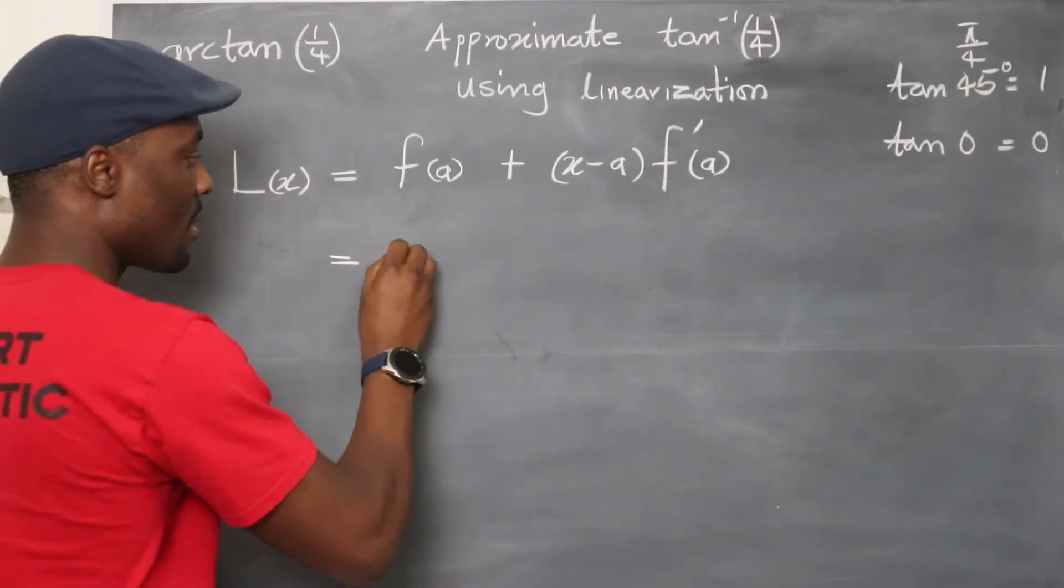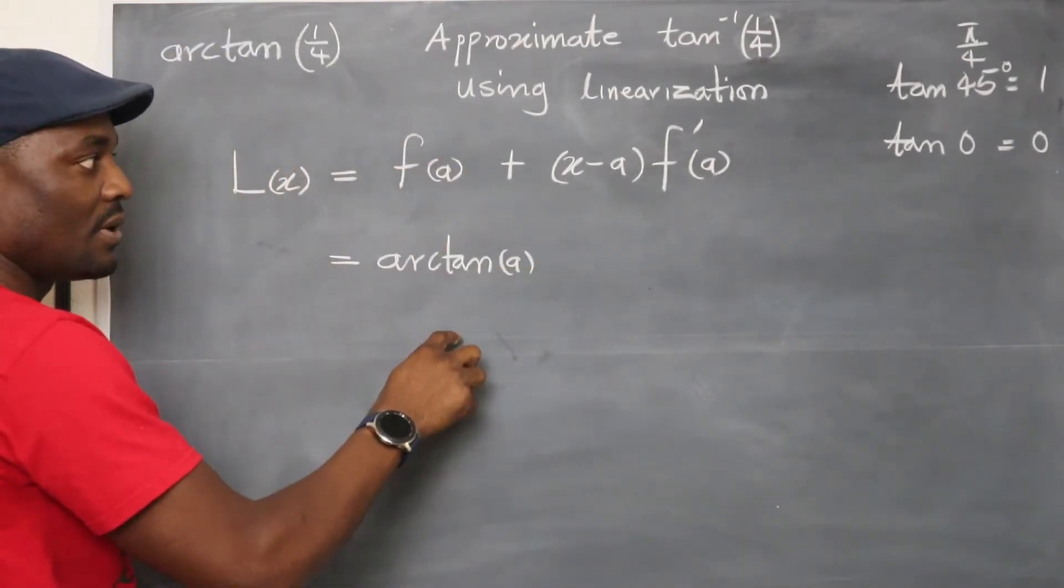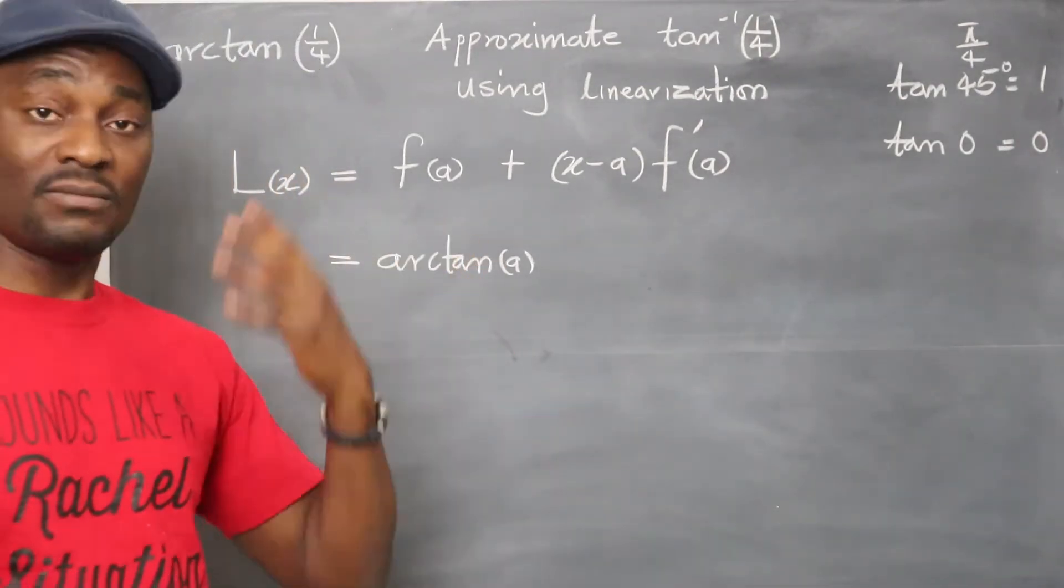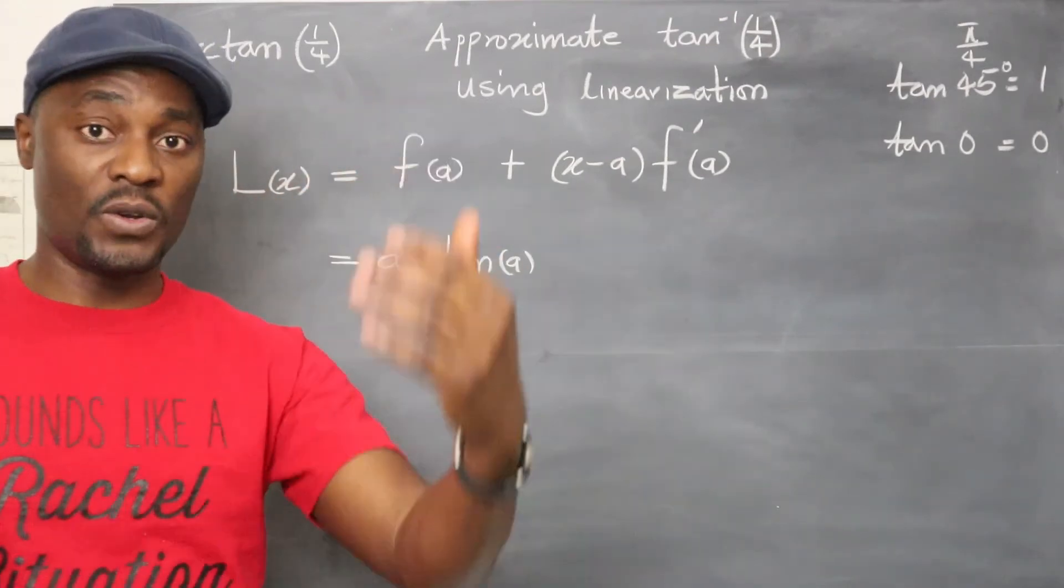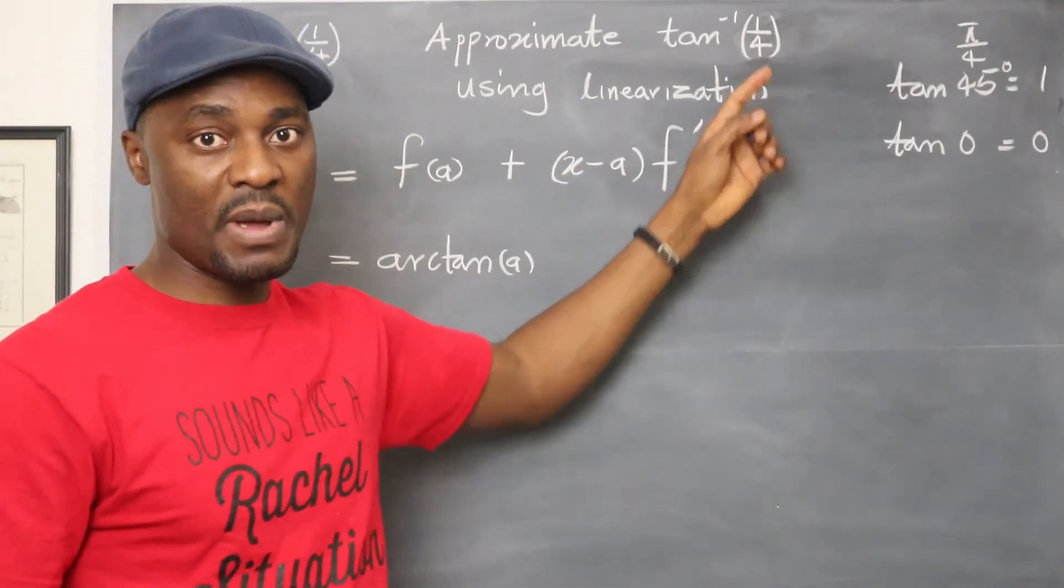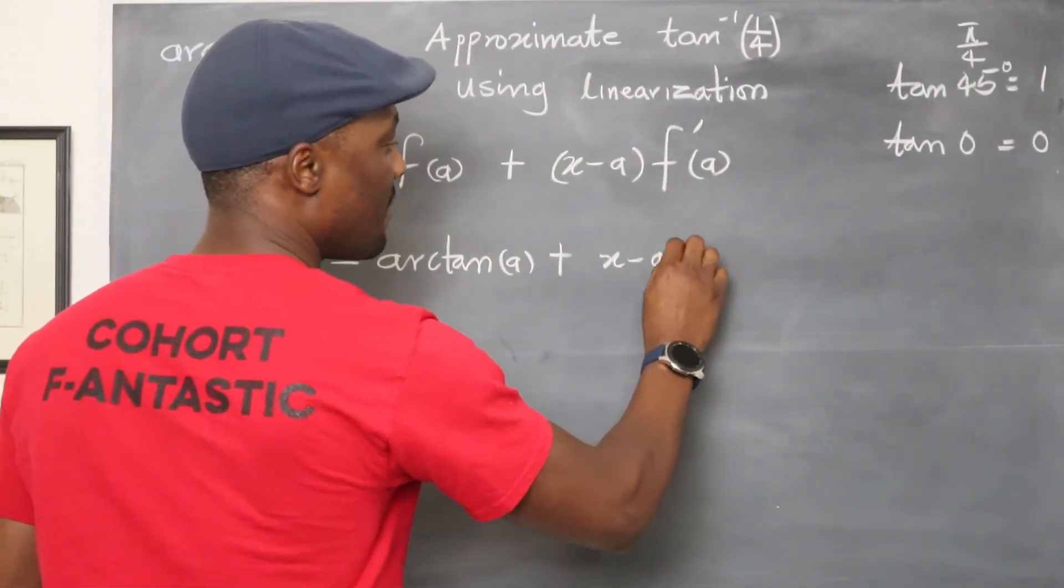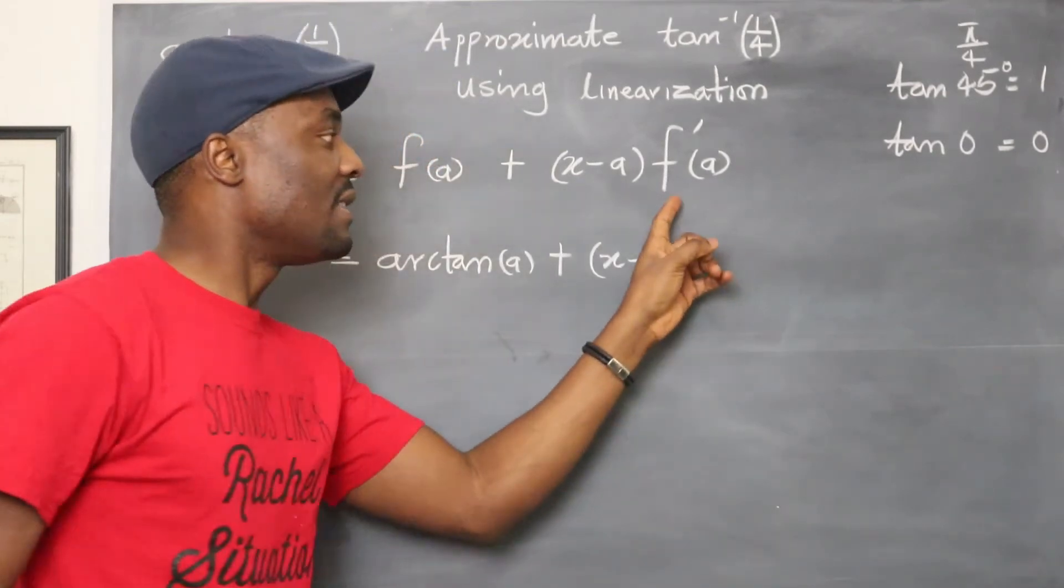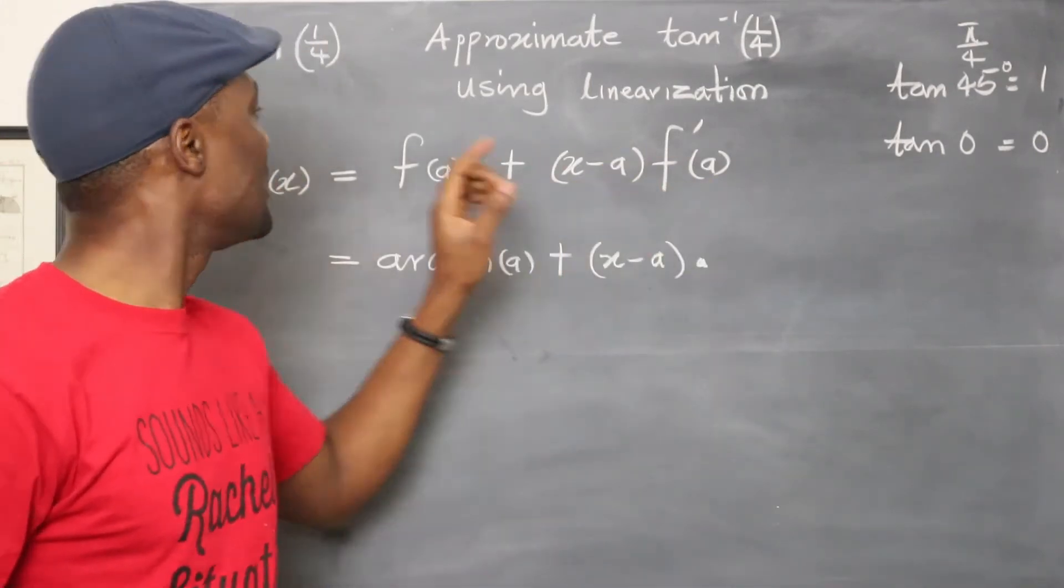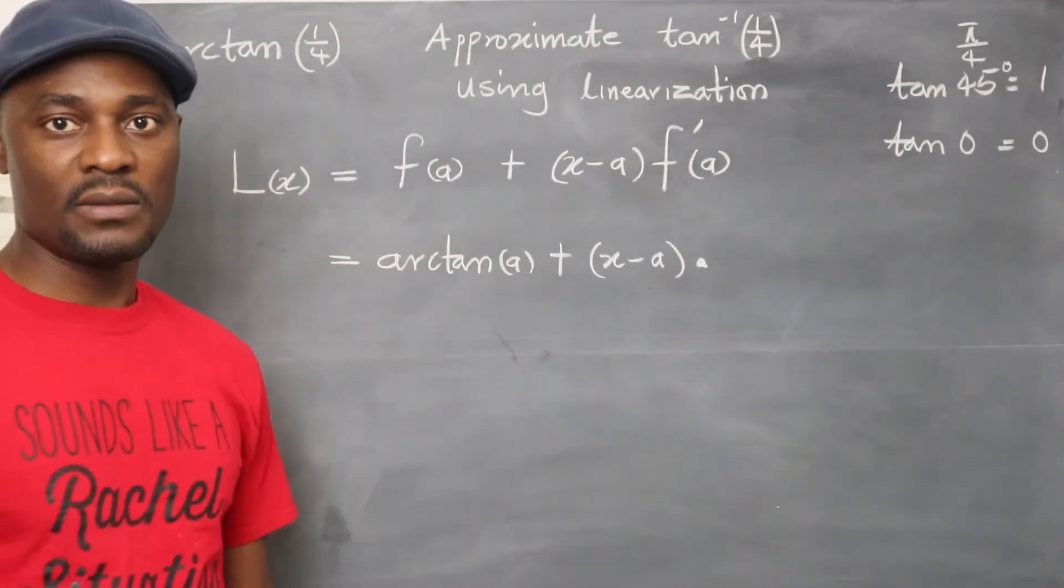The linearization, which will mean the equation of a tangent to this function at point a. So this will be arc tan a. Remember a is a number you choose by yourself. And you want to choose a number that works easily, that you can easily get without using a calculator or checking a table of values. And the number is also meaningfully close to what you're trying to do. Remember you're approximating.